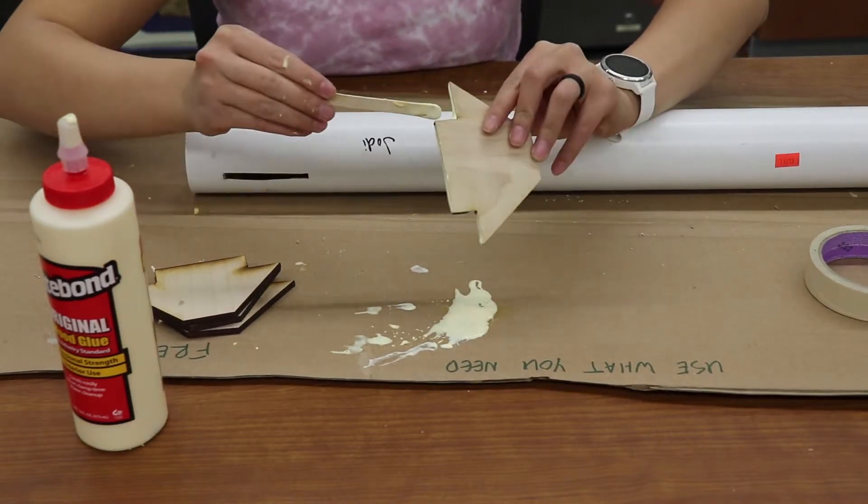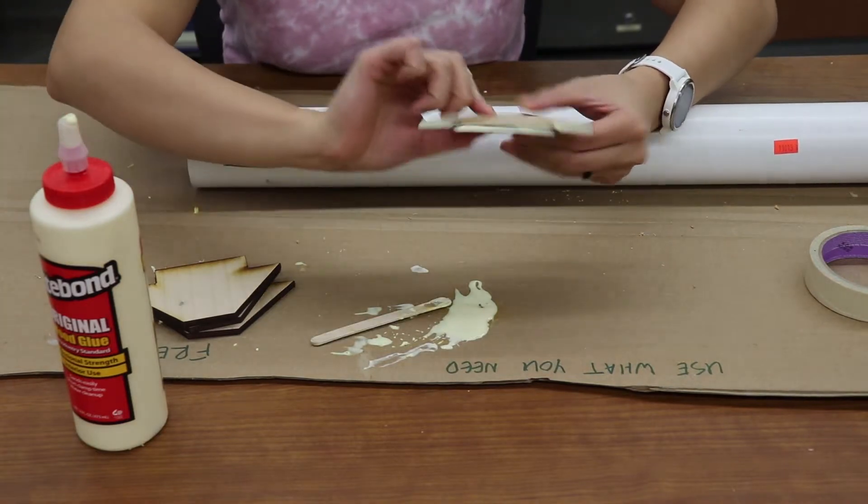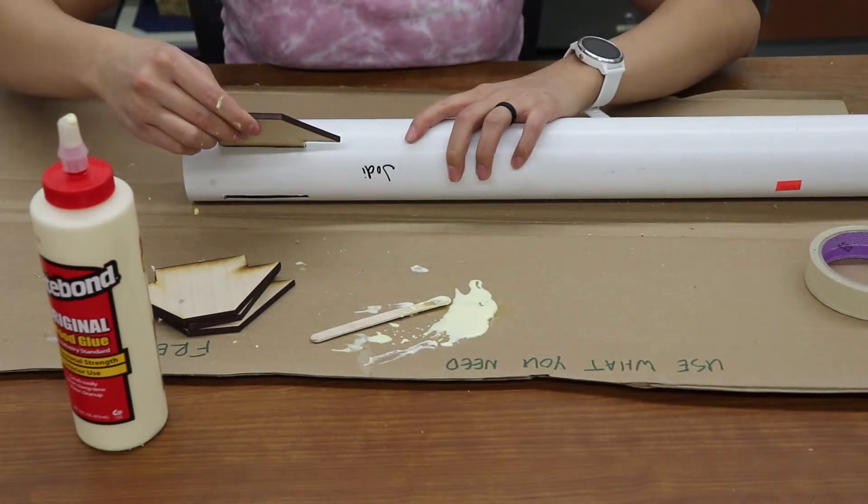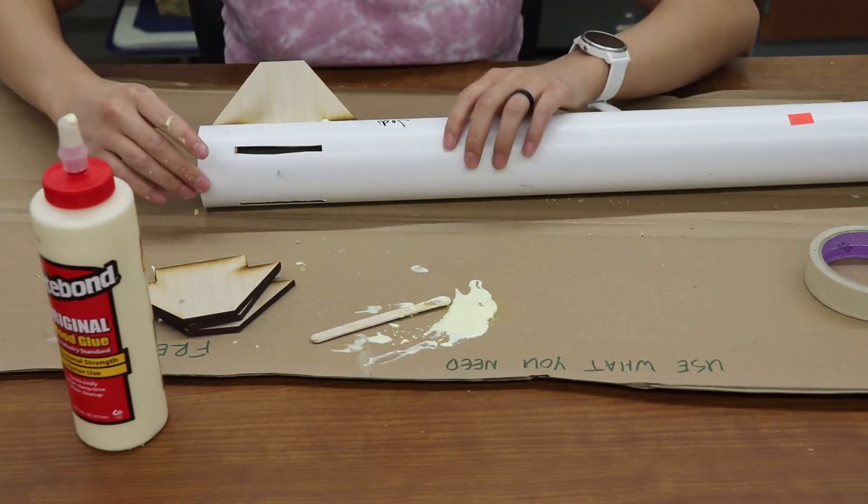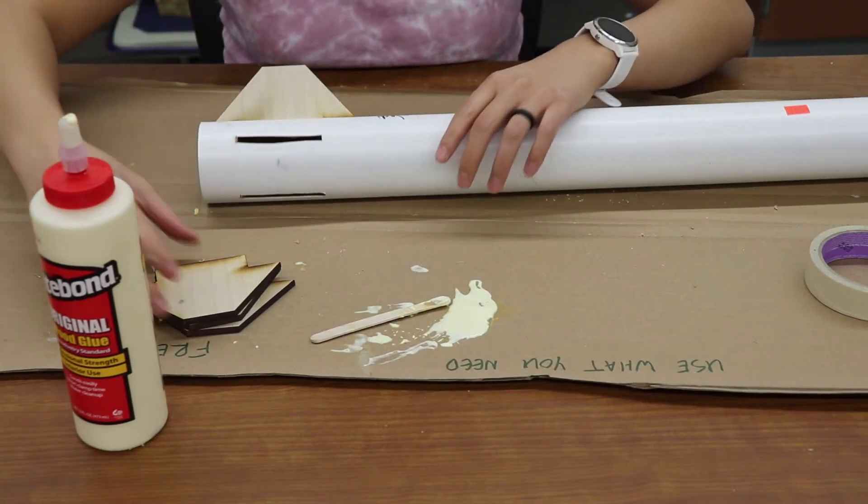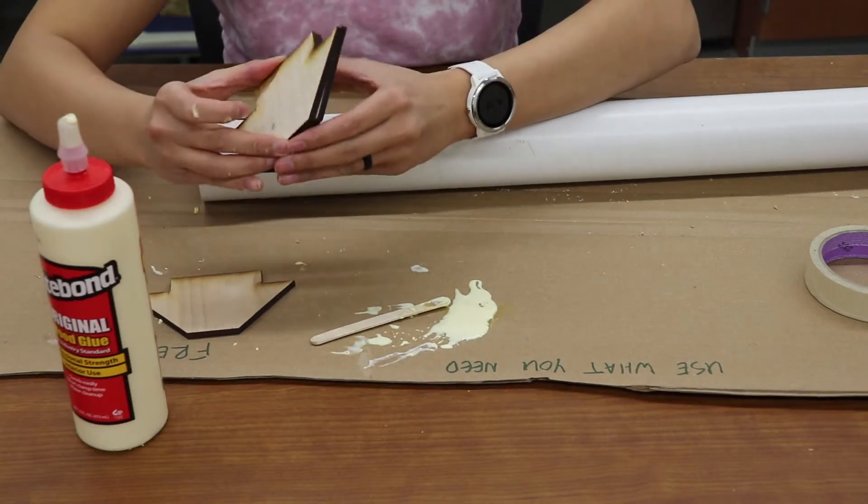Remember that if you're building a level two rocket you should be using epoxy. Once you have glue on your fins, you just have to stick them in their fin slots and do the same process for the rest of the fins.